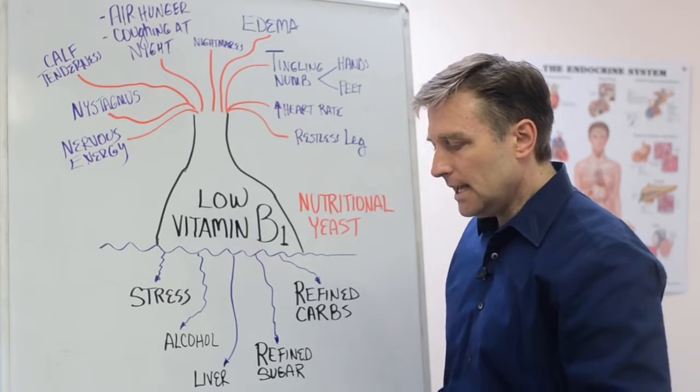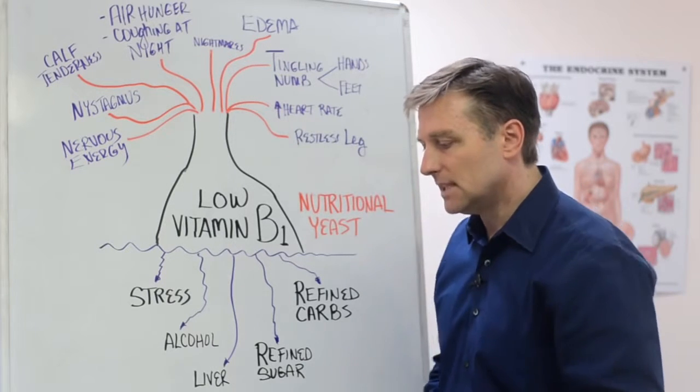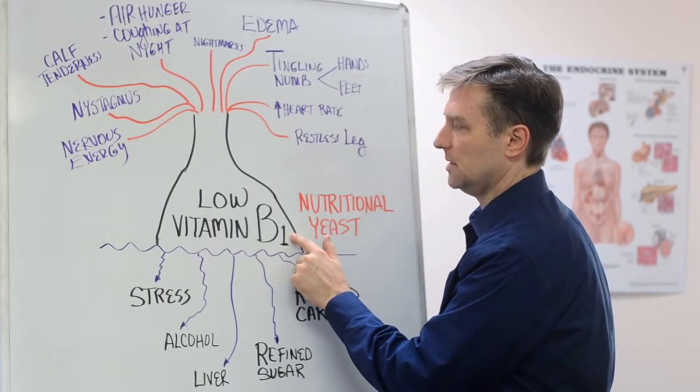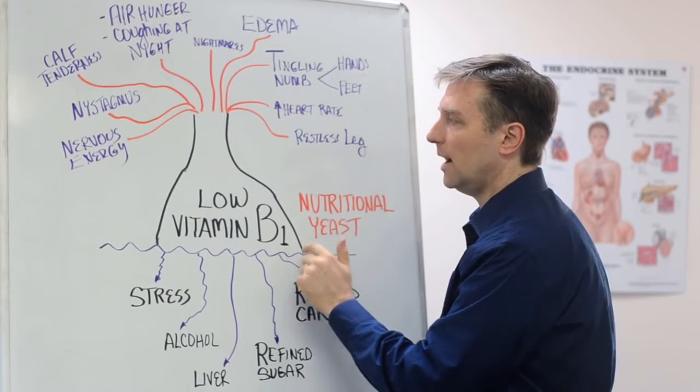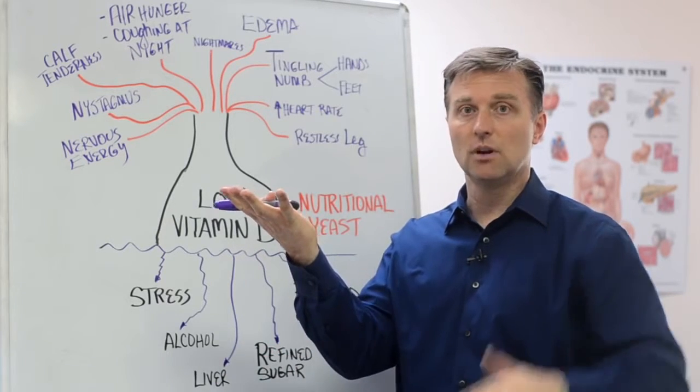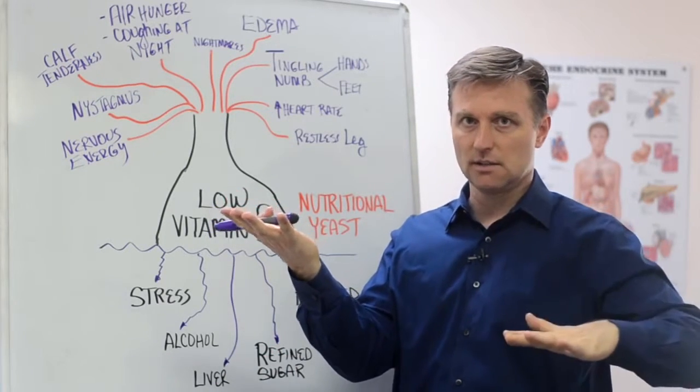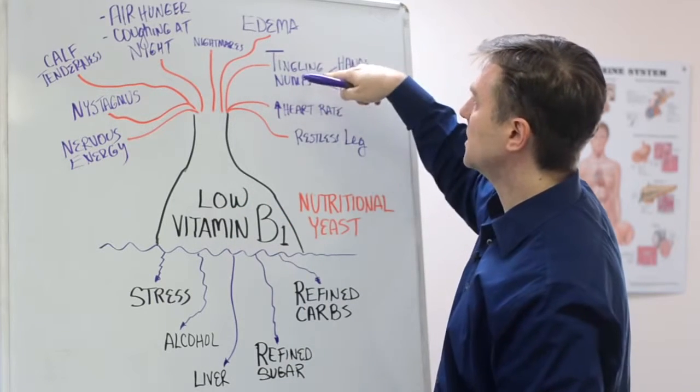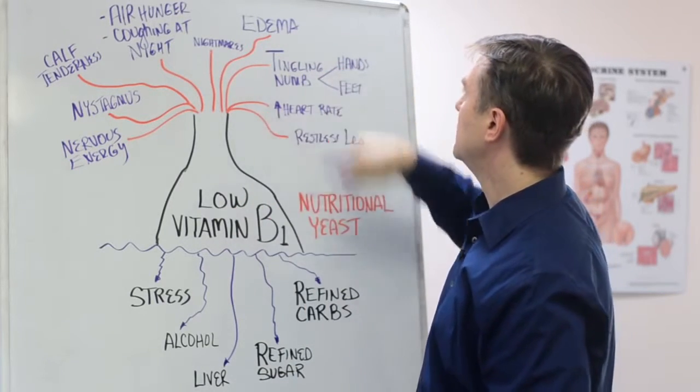That's the tingling in the feet and the hands because they're very deficient in B1. In fact, diabetics need about 15 times more B1 than a normal person. They're very low in B1. And when you actually give them B1 in a natural form, it actually helps lower their insulin. So it's really good for diabetics. But that's why they get those symptoms because they run out of the B1 and that's the remedy.